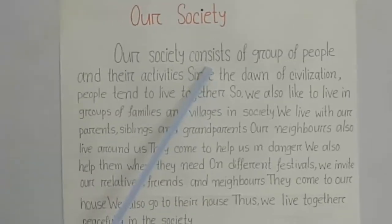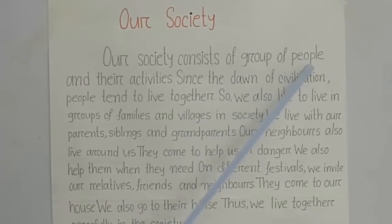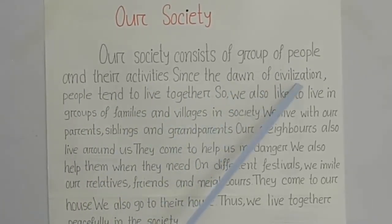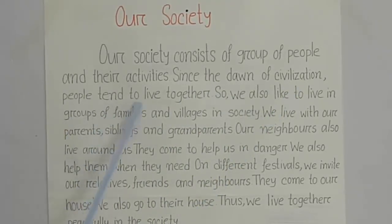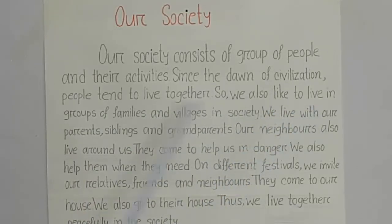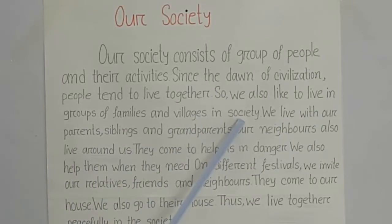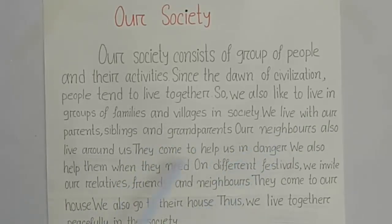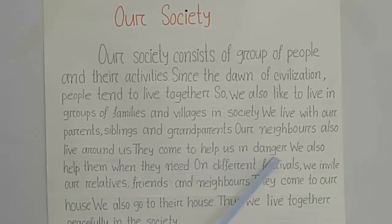Our society consists of a group of people and their activities. Since the dawn of civilization, people tend to live together. So we also like to live in groups of families and villages in society. We live with our parents, siblings and grandparents. Our neighbors also live around us. They come to help us in times of danger.